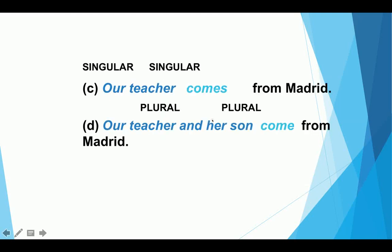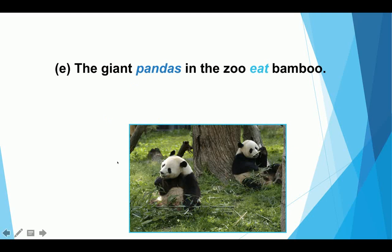Our teacher comes from Madrid. So you have our teacher in the singular, and you have comes in the singular. Our teacher and her son, plural, come from Madrid.